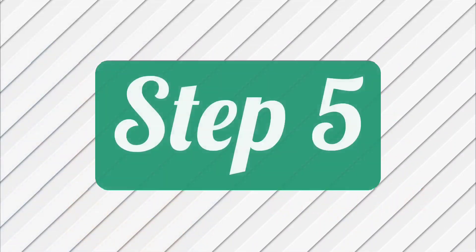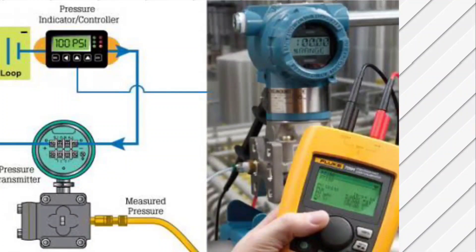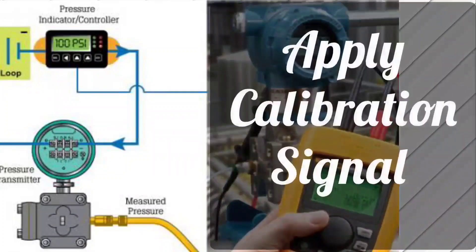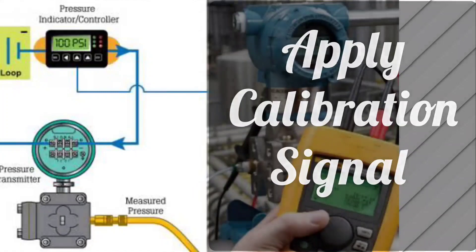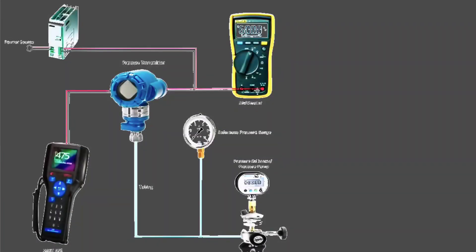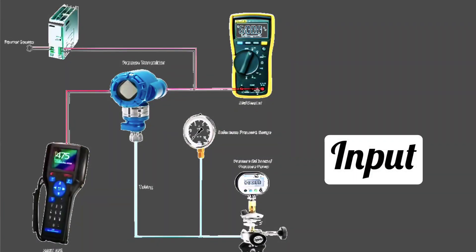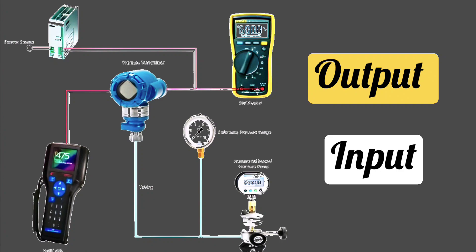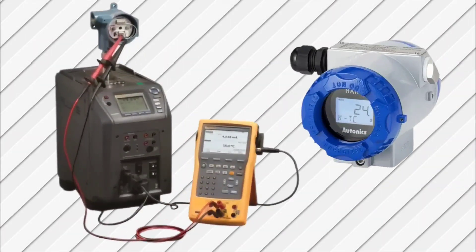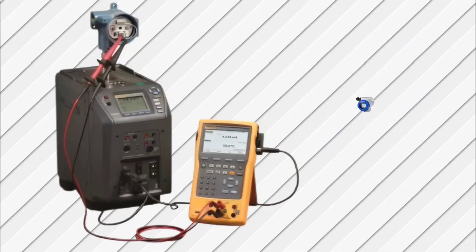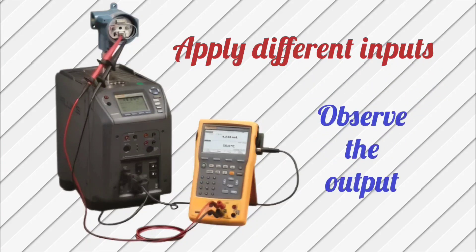In the next step, the device or instrument to be calibrated, the calibration signal is applied to that device. In this, by giving specific inputs, the outputs are observed. For example, suppose you are calibrating a temperature transmitter. Then by applying different inputs, you will observe the outputs.